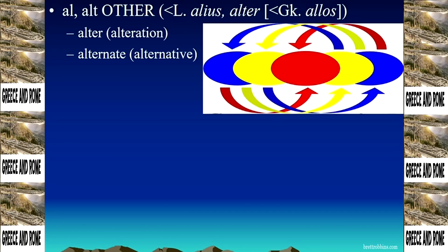When you alternate, you go back and forth between one thing and another — but it's not only one thing and the other, it could be many different things. And that's why I like this illustration. You're jumping from the blue to the red to the yellow to another yellow to the red to the blue to another blue — doesn't matter. The fact is that you're alternating, you're making other. Making something be other, by alternating between one thing and another, and another and another. It doesn't have to just be two.